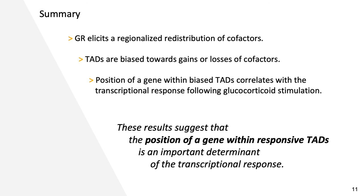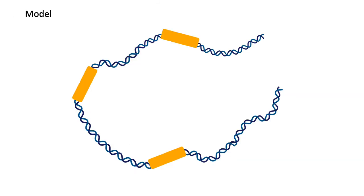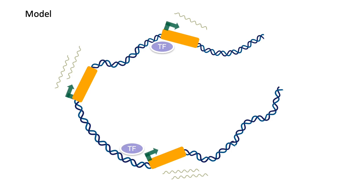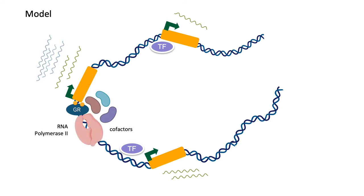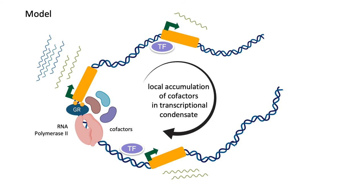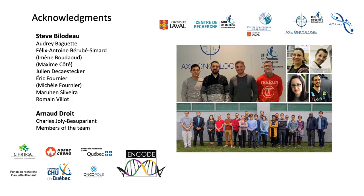In summary, we saw that GR elicits a regionalized redistribution of co-factors, TADs are biased towards gains or losses of co-factors, and the position of a gene within a TAD correlates with the transcriptional response following glucocorticoid stimulation. This result suggests that the position of a gene within responsive TADs is an important determinant of the transcriptional response. The model we suggest is that in a TAD containing several genes expressed at basal level, after stimulation GR will bind in the neighborhood of a gene, recruit co-factors and RNA polymerase II to activate gene expression — and what we are suggesting is that local accumulation of co-factors as a transcriptional condensate allows genes in the chromatin environment to be activated. I would like to thank ENCODE for making available genomic data for the scientific community, and thank you for your attention.